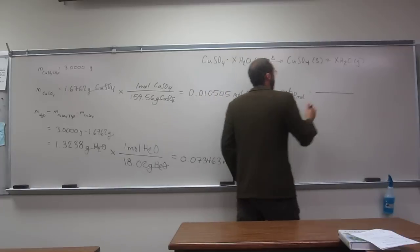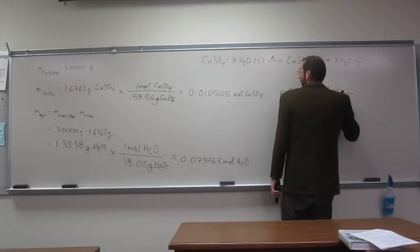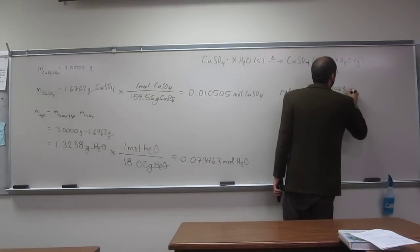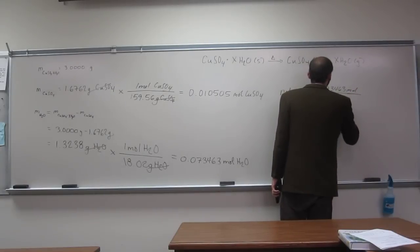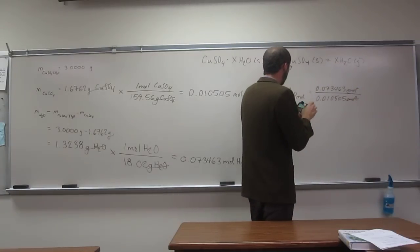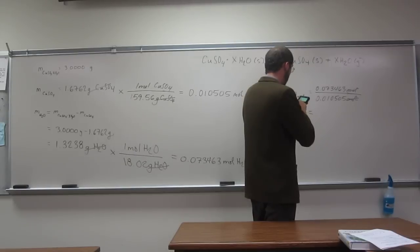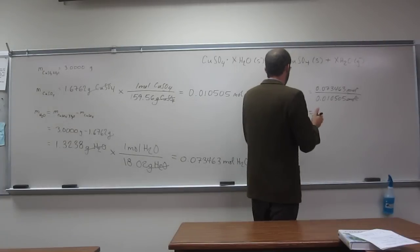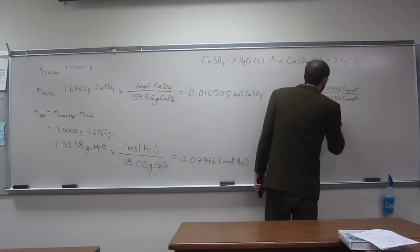So 0.073463 moles divided by 0.01055 moles. So, and you get 6.99.